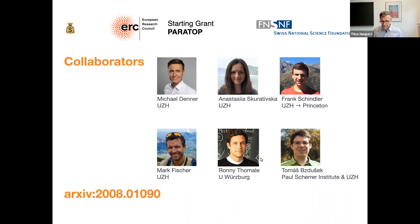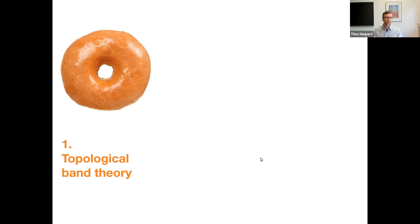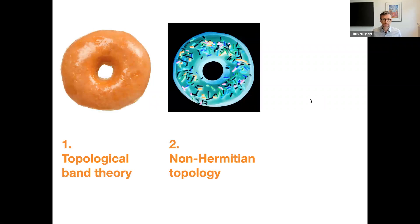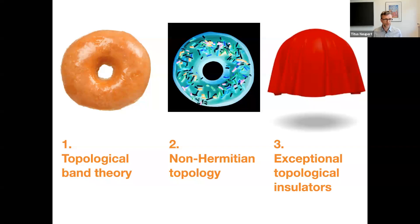For this talk, I have basically the plan to structure it in three parts. The first will be on topological band theory in a conventional sense for Hermitian systems — just a reminder of a few concepts. Then I will highlight what changes when we go to non-Hermitian systems, which is important for these exceptional topological insulators. The last part of the talk will be dedicated to the exceptional topological insulators themselves.